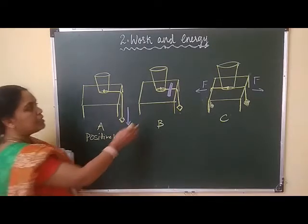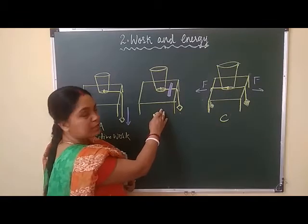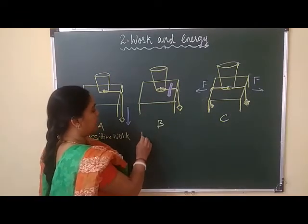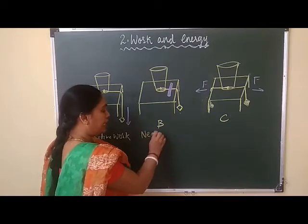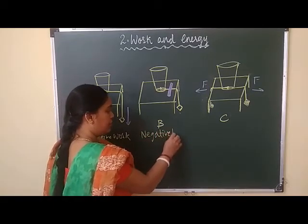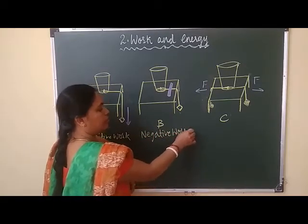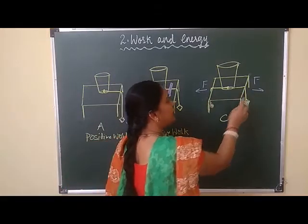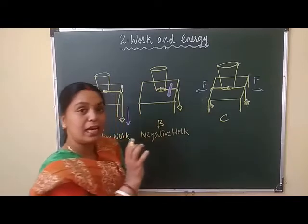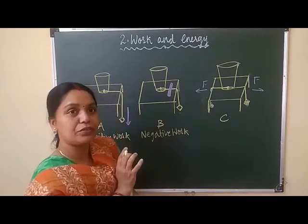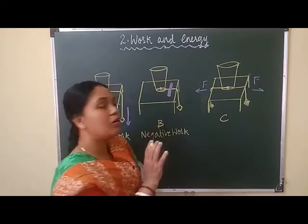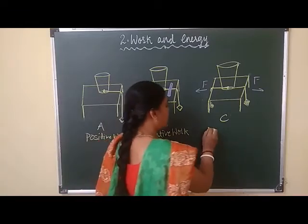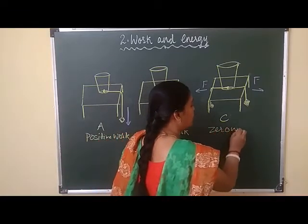In figure B, force and displacement are opposing each other, so it is an example of negative work. In figure C, both forces are balanced, so they are not allowing any movement or displacement — this is an example of zero work. Take note.